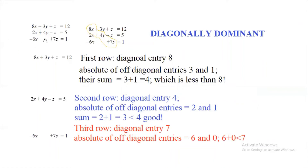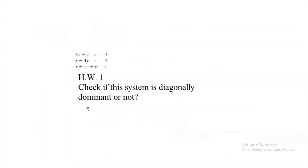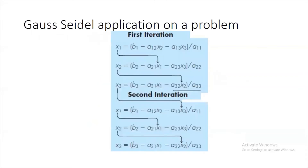For the third row, the y term is missing so we write 0y. The diagonal entry is 7 and the off-diagonal entries are −6 and 0. Taking absolute values: 6 + 0 = 6, which is less than 7. The inequality is satisfied, so this system is diagonally dominant. Homework: prove that a given system is diagonally dominant and upload it to the portal.